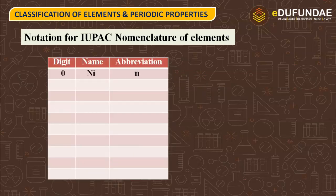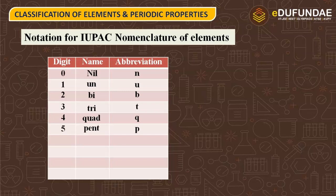So the notation for IUPAC nomenclature of elements — for digit 0 the name is nil, abbreviation n; for 1 the name is un, abbreviation u; for 2 the name is bi, abbreviation b; for 3 it is tri, abbreviation t; for 4 the name is quad, abbreviation q.